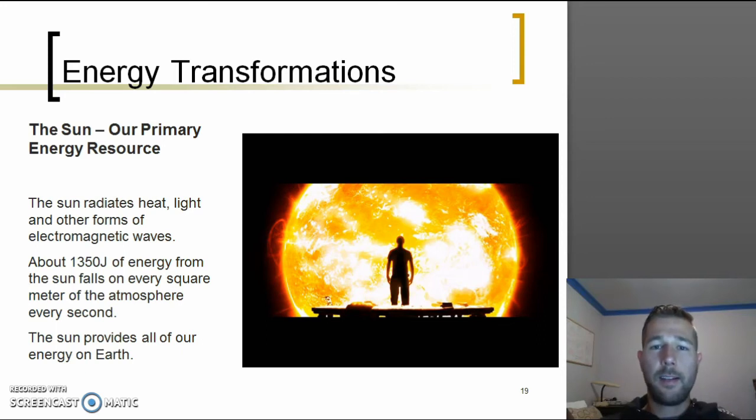Another example we can use to explain energy is using the sun as our primary energy resource. The sun radiates heat and light and other forms of waves and it provides all the energy on earth. So the energy that is required for plants to grow, for heat and everything like that comes from the sun. Now we don't get it for free, the sun actually creates it and it is just transferred to us by radiation, light and other means.